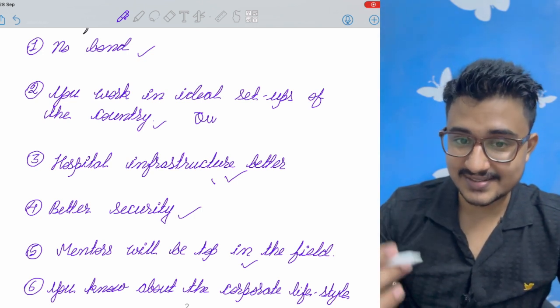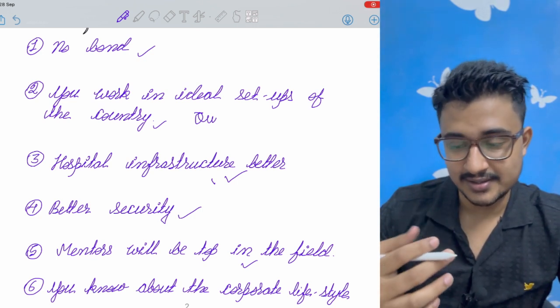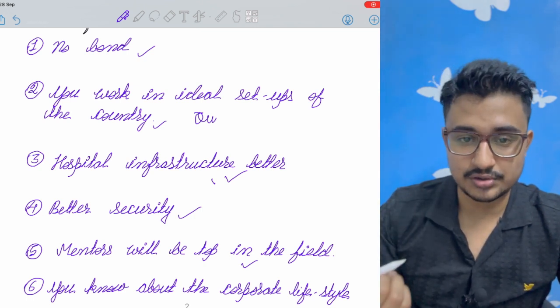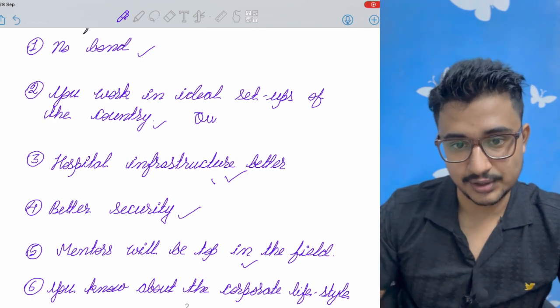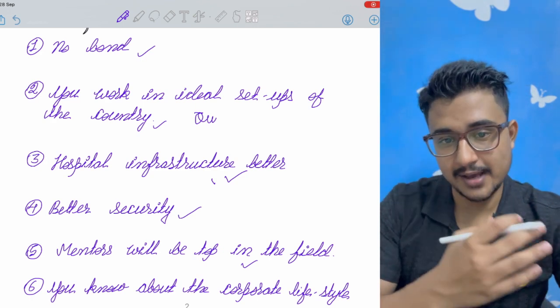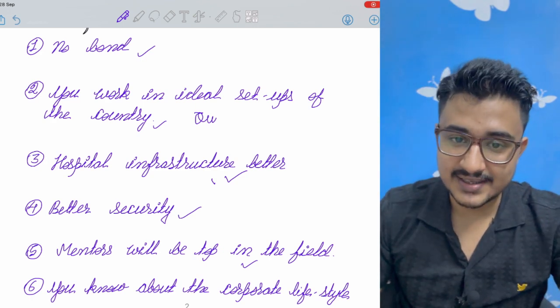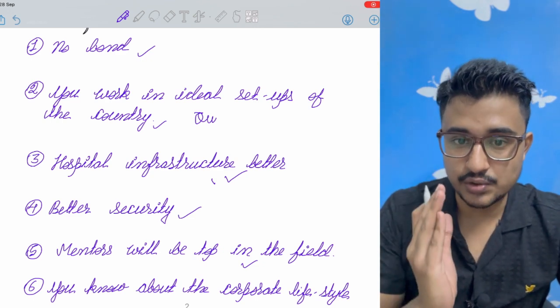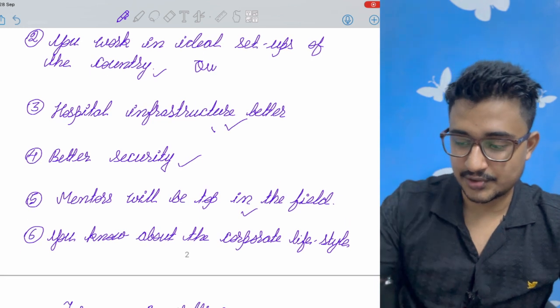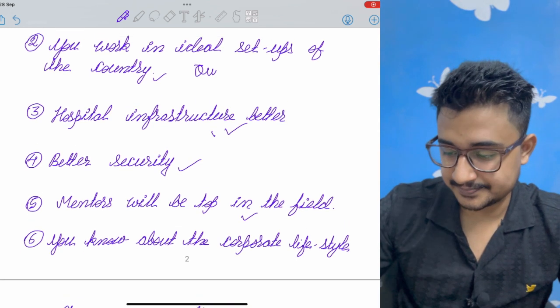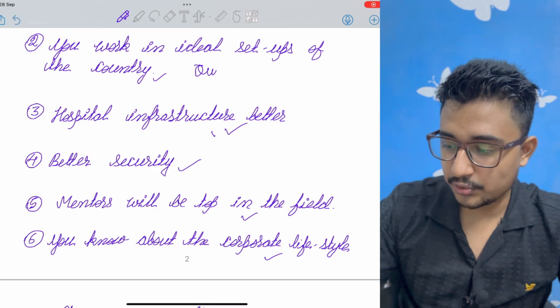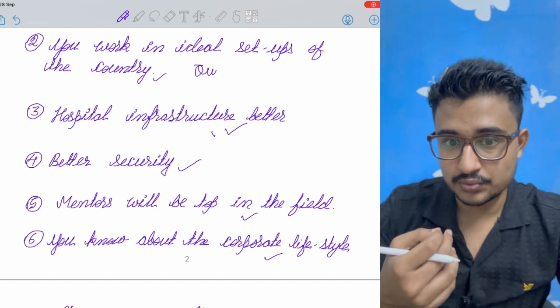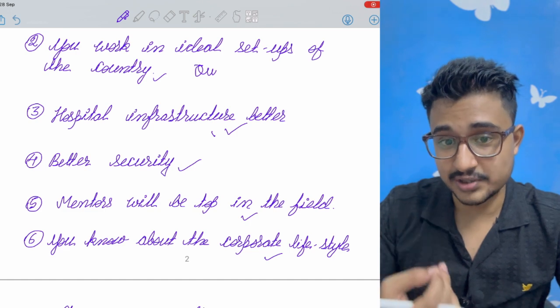Like if anyone does DNB in CMRI so in respiratory medicine or the pulmonary medicine there the mentor is Dr. Rajadhar and he is the top pulmonologist. Same in Apollo Dr. Kaushik Lahiri is there and he is the top dermatologist. So your mentor and your guide will be the top of that field in DNB private setups. And you get to know about the corporate lifestyle because in future if you want to earn more than most doctors prefer corporate setup only.